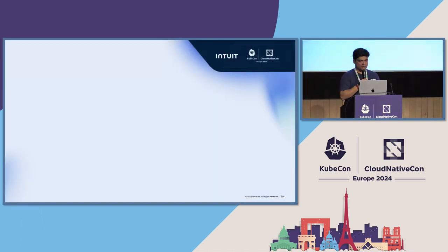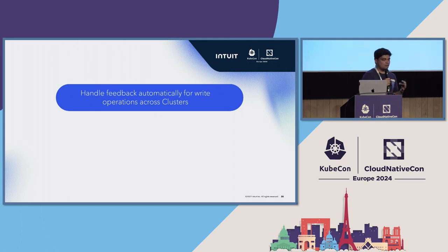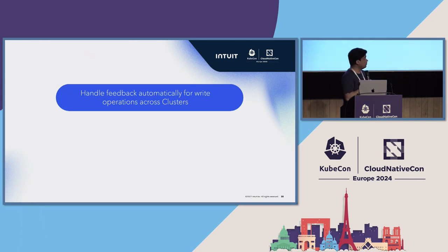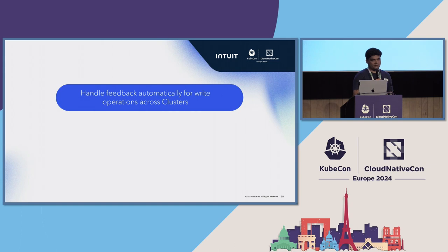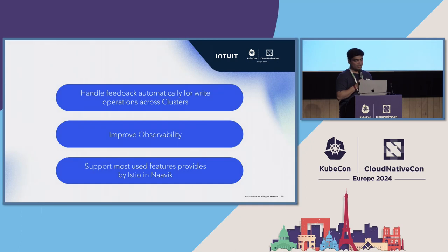The last benefit is we can handle breaking CRD changes or breaking Istio changes during upgrades transparently — the mesh team has full authority to update configurations without impacting users. As next steps, we want to handle feedback automatically for write operations across clusters. If a write on one cluster fails, we currently rely on logging and alerting. We are working on designs to automatically heal the ecosystem, improve observability, and add the most commonly used Istio features in Navic.